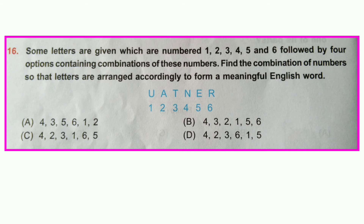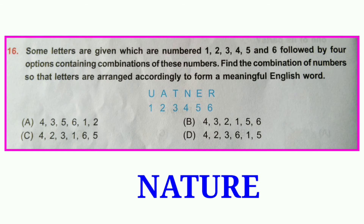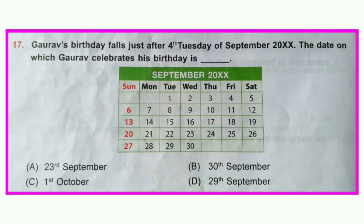Question number sixteen: Some letters are given which are numbered one through six, followed by four options containing combinations of these numbers. Find the combination of numbers so that the letters are arranged to form a meaningful English word. The word formed is NATURE (N-A-T-U-R-E). Option C is correct: 4-2-3-1-6-5.